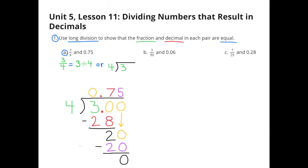I started by putting that yellow 0 above the 3, since 4 does not go into 3. Then I marked the decimal point and put a yellow 0 in the tenths place next to the 3. I asked how many times does 4 go into 30? Above that yellow 0 in the tenths place, I put a 7. 7 times 4 equals 28, and 30 minus 28 gives a remainder of 2 in the tenths place.